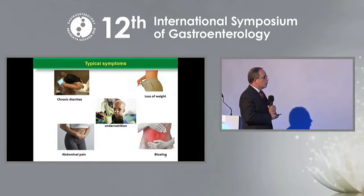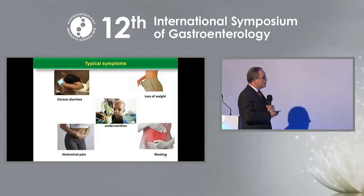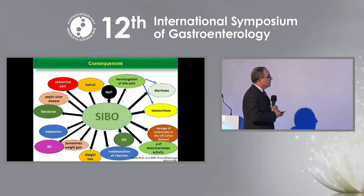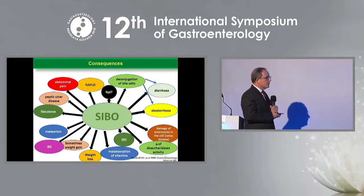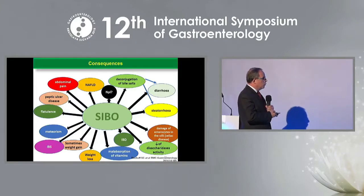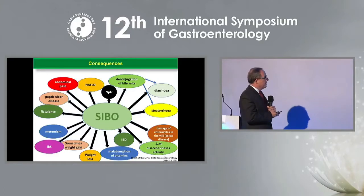Typical symptoms are loss of weight, bloating, abdominal pain, chronic diarrhea, and under-nutrition. Consequences of SIBO include conjugation of bile salts, diarrhea, steatorrhea, damage of enterocytes in the villi, loss of disaccharidase activity, malabsorption of vitamins, weight loss (but sometimes also weight gain), IBS, meteorism, flatulence, peptic ulcer disease, abdominal pain, and also NAFLD.